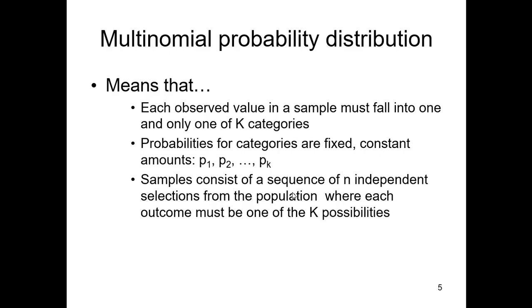Okay, fancy word time. Multinomial probability distribution just means that every observed item in a sample must fall into one of K categories. And so K becomes a key measurement for us. So it falls into certain categories. The probability that you fall into the category depends on P1, P2, up to Pk. Probability falling in category 1 is P1. Probability falling in category 2 is P2, and on and on and on until you run out of categories. So samples are independent selections from the population where each outcome must be one of those possibilities.